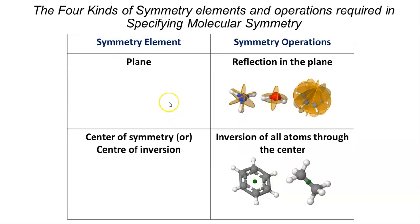There are four different kinds of symmetry elements and symmetry operations, of which we are going to discuss only the plane and reflection for now.